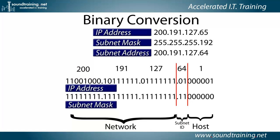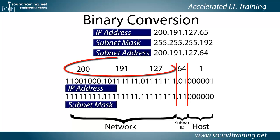That simply means we've extended the mask by two bits into the host portion of the address. The only two bits that could be turned on to equal 192 are the 128 and the 64 bit — so those are the only two that could result in that number. Therefore, those two are turned on, and we still have a major network number of 200.191.127.